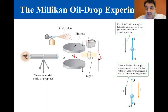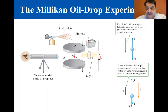Droplets appear as shining stars against a dark background, and the rate of fall of individual drops can be determined. We will assume a single drop having a mass M and carrying a charge Q is being viewed, and its charge is negative.